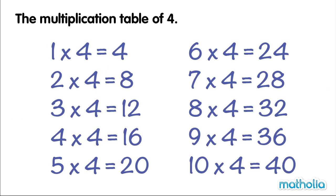The multiplication table of four. One four is four. Two fours are eight. Three fours are twelve. Four fours are sixteen. Five fours are twenty. Six fours are twenty-four.